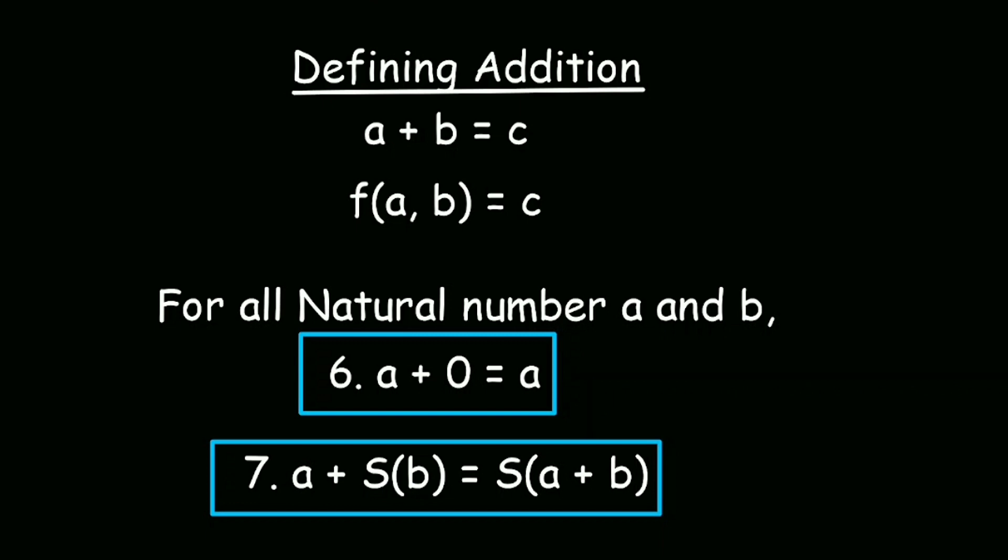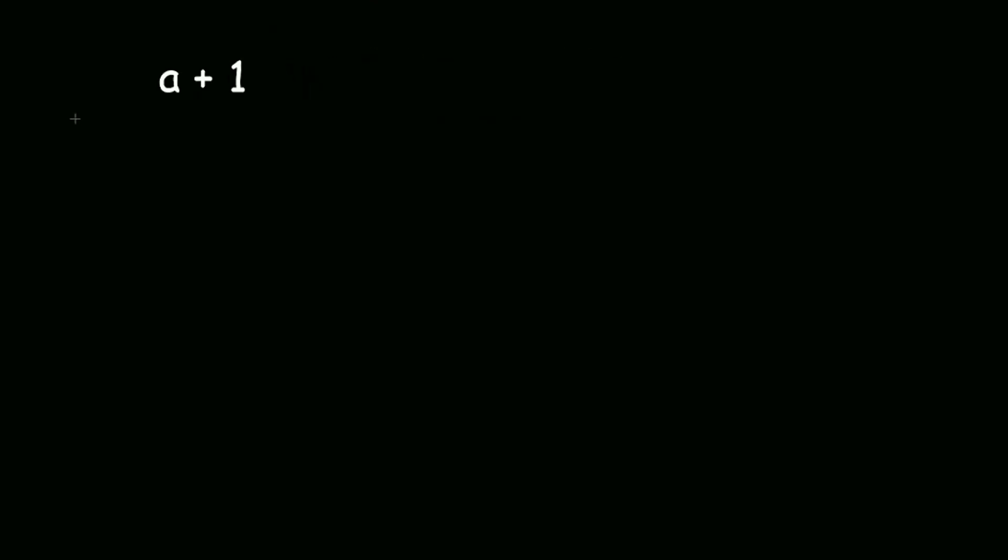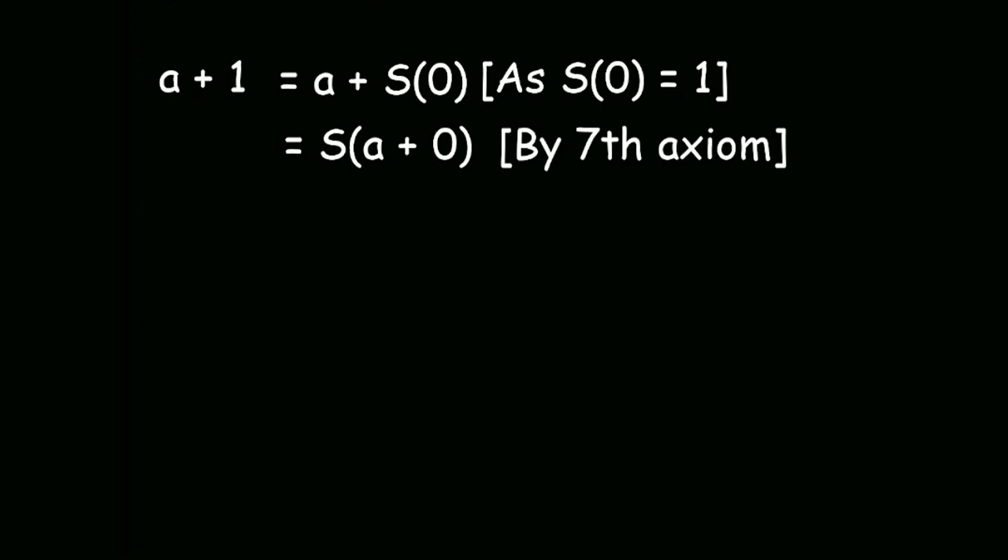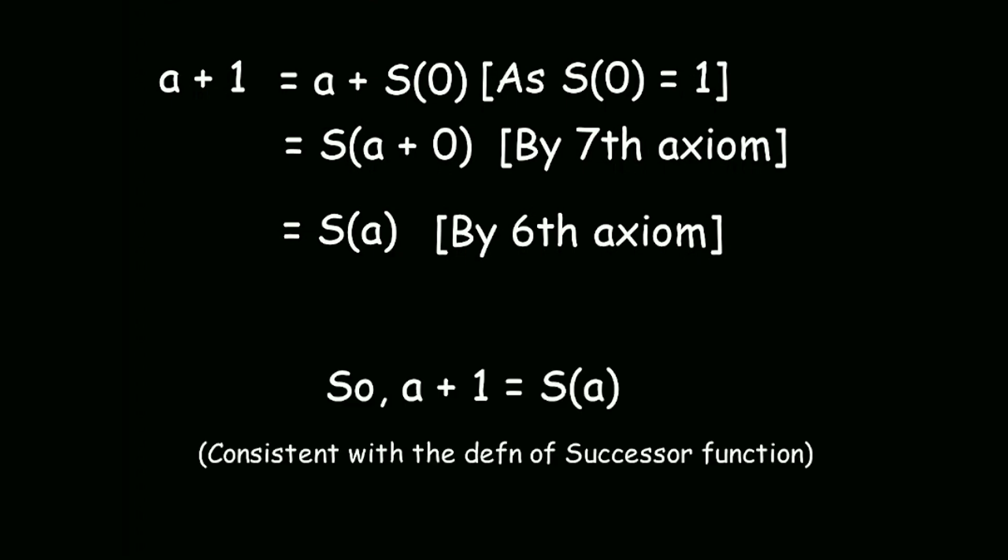Let's see what the second one of these axioms means. Let's say we have a plus 1. We can write it as a plus successor of 0, as successor of 0 is equal to 1, which is equal to successor of a plus 0 by our seventh axiom. And as a plus 0 equals a, based on our sixth axiom, we can write successor of a plus 0 as successor of a. So we have a plus 1 equals successor of a, which is consistent with our definition of successor function. Again, if you want, you can assume different values of a and b and check whether it makes sense intuitively.